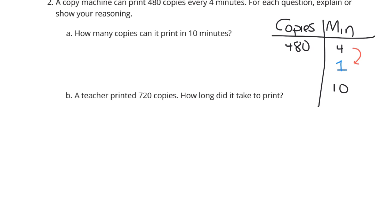Well, 4 divided by 4 is 1. So 480 divided by 4 is going to be 120 copies per minute. If I multiply by 10 here, 120 multiplied by 10 is 1,200. So how many copies can it print in 10 minutes? 1,200 copies.